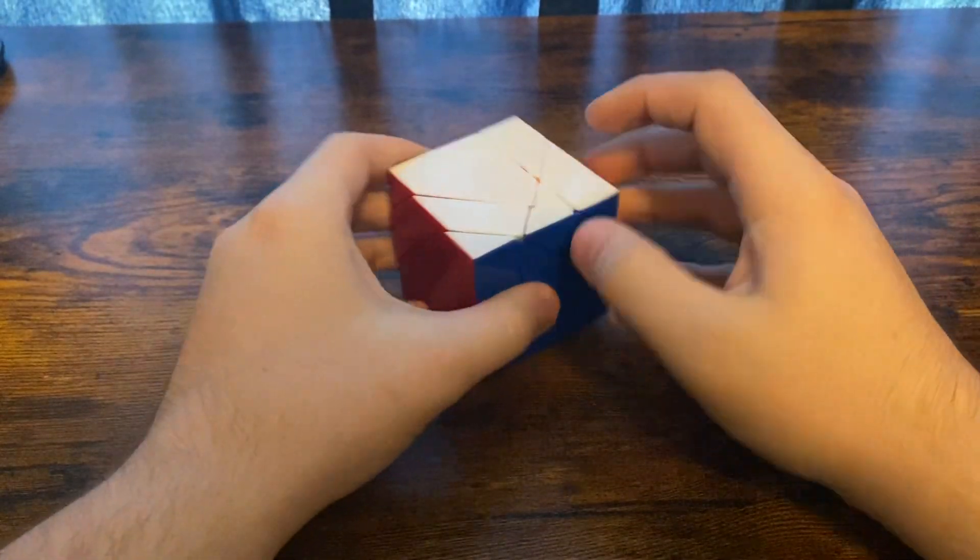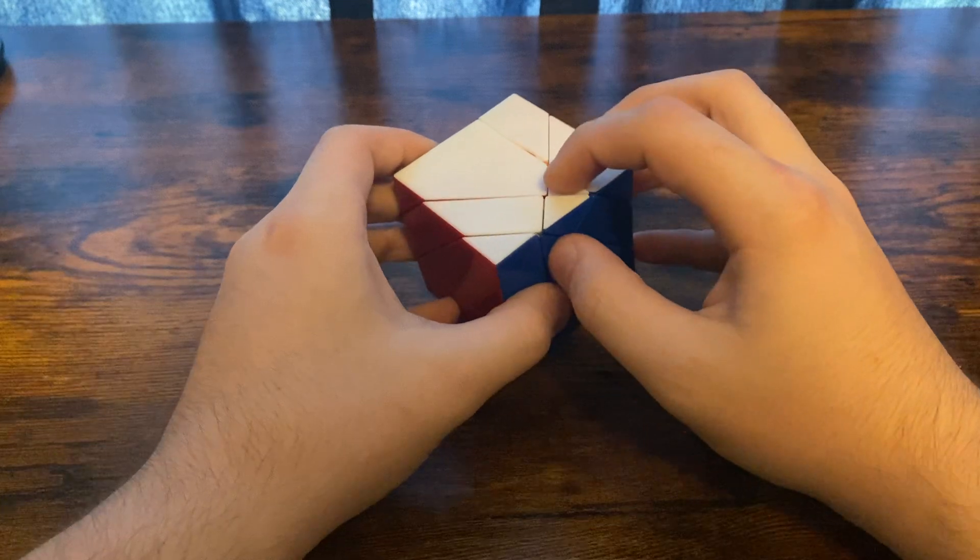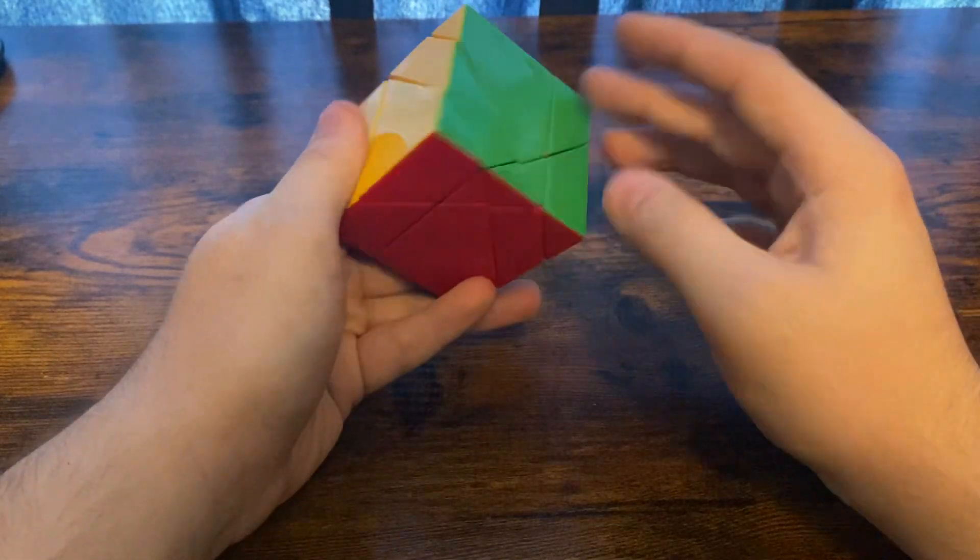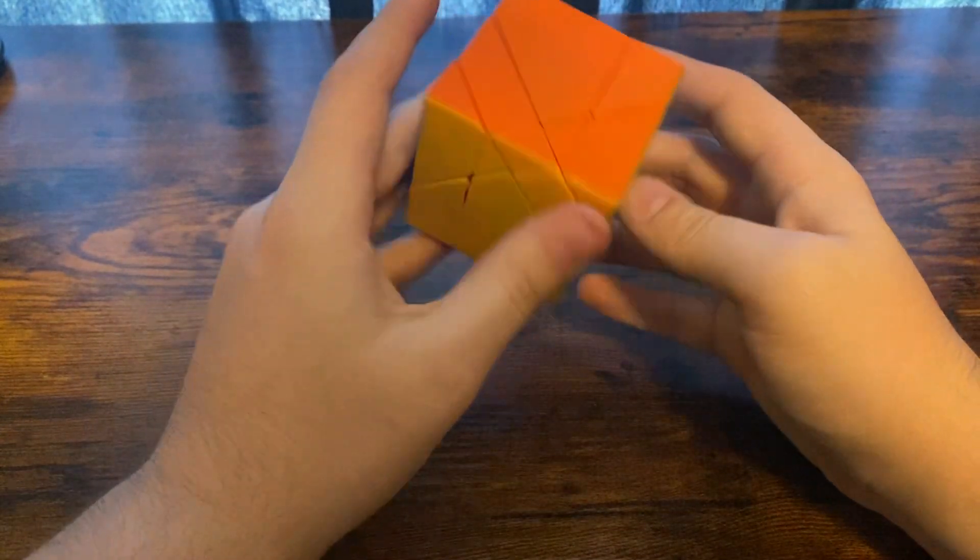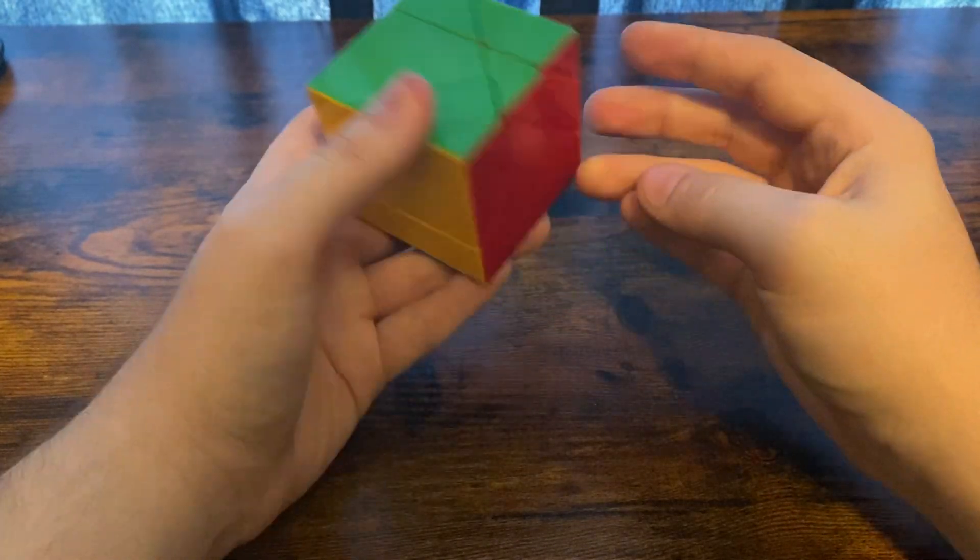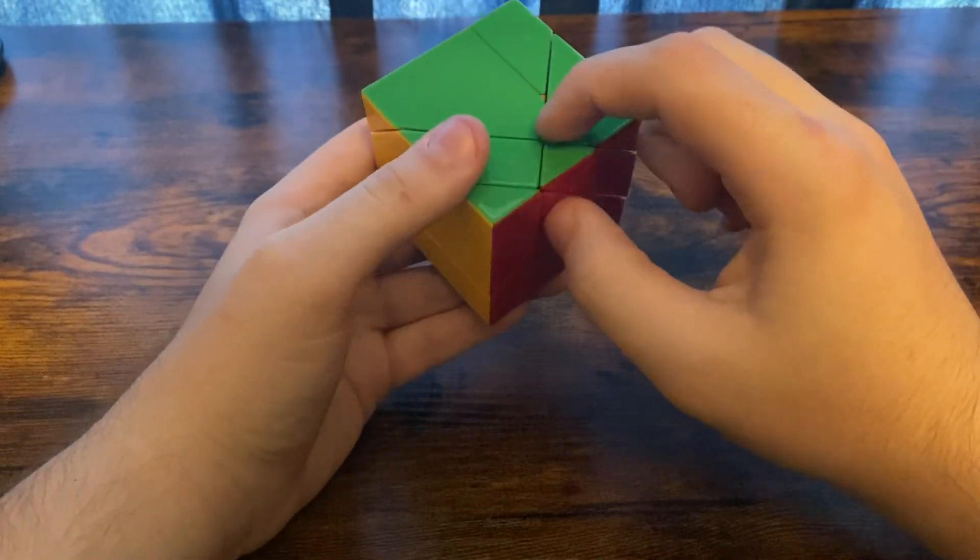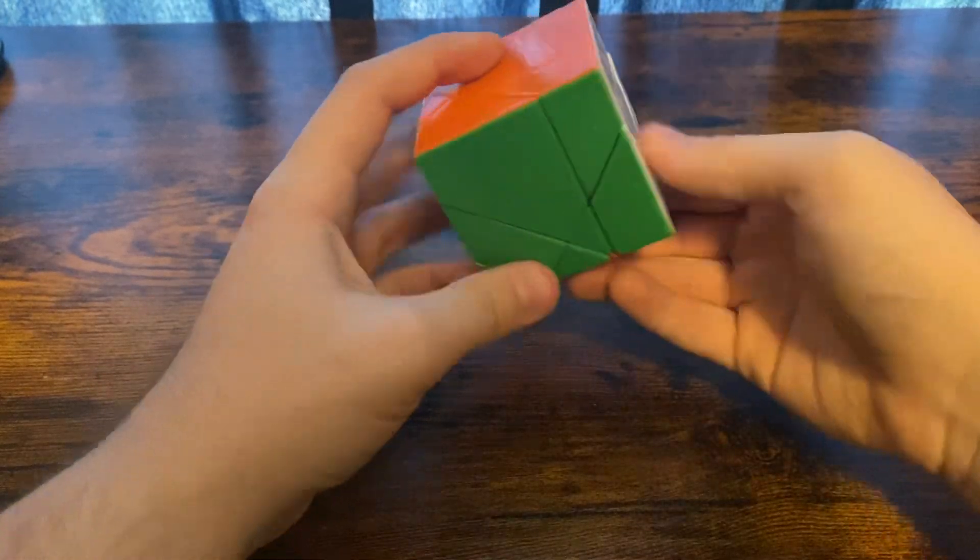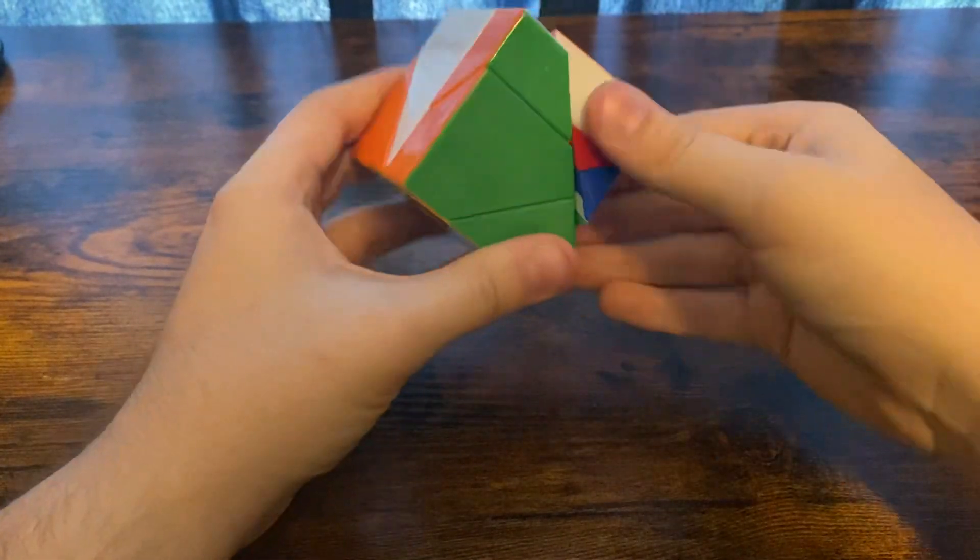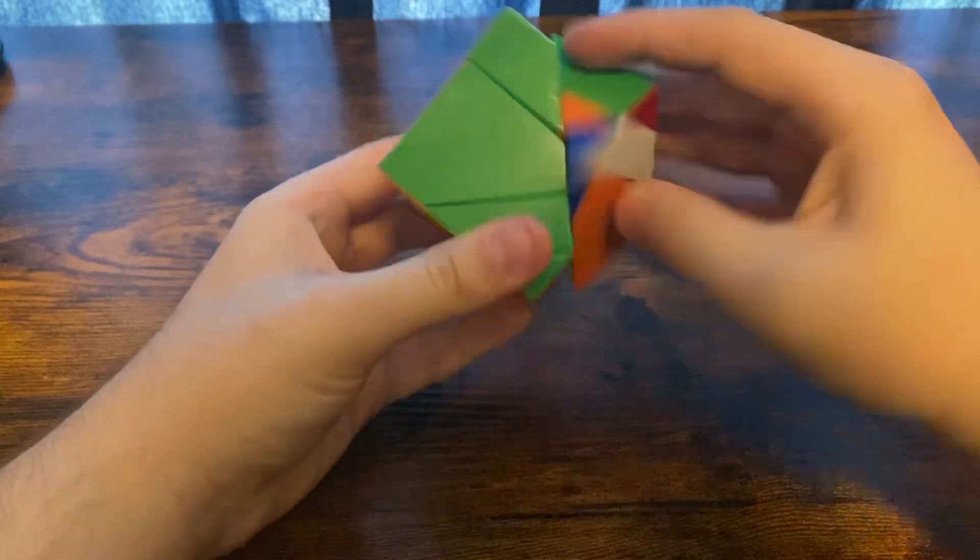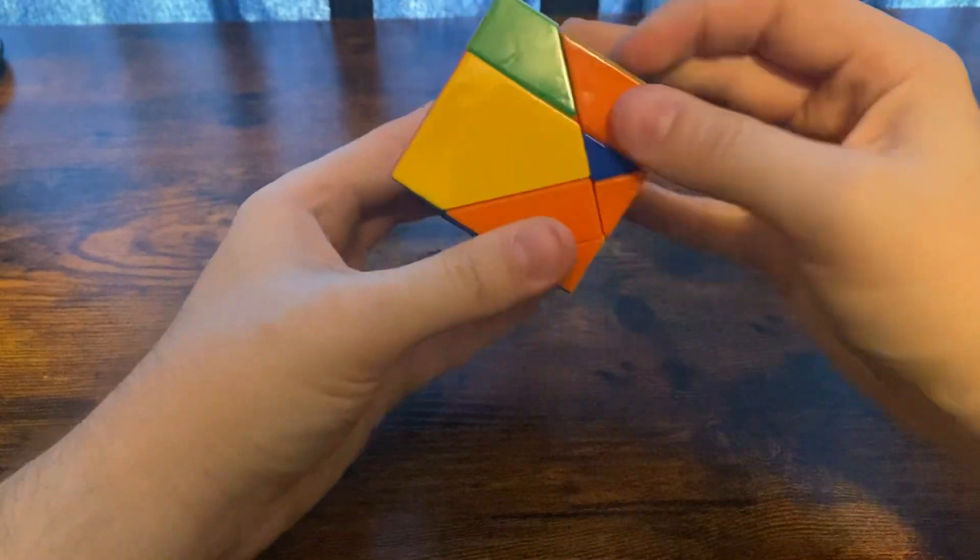The next step after this would be to solve the little triangular pieces, but in this case we got lucky and skipped that step. So I'm actually going to mess up these pieces and show you how to solve that step.